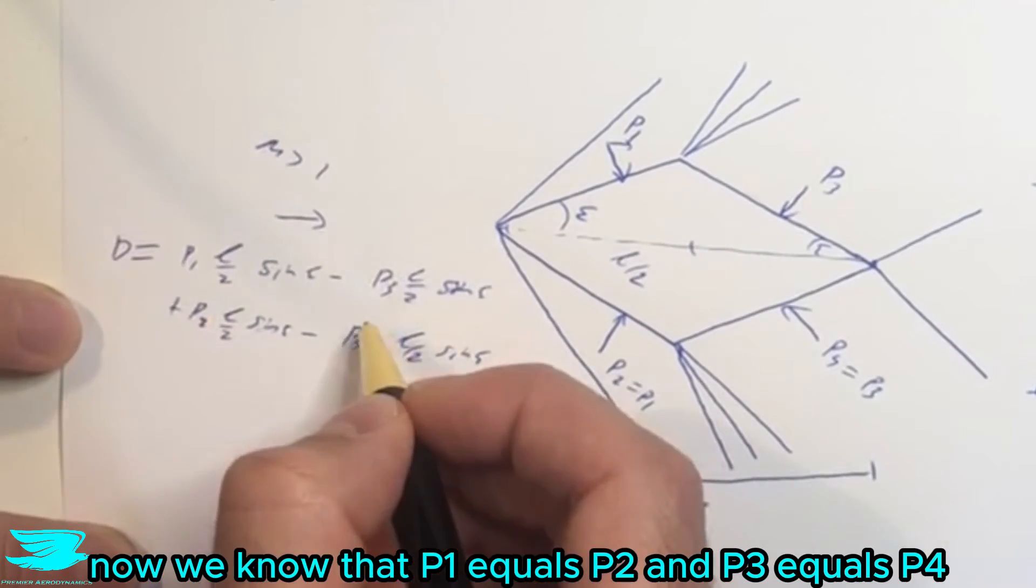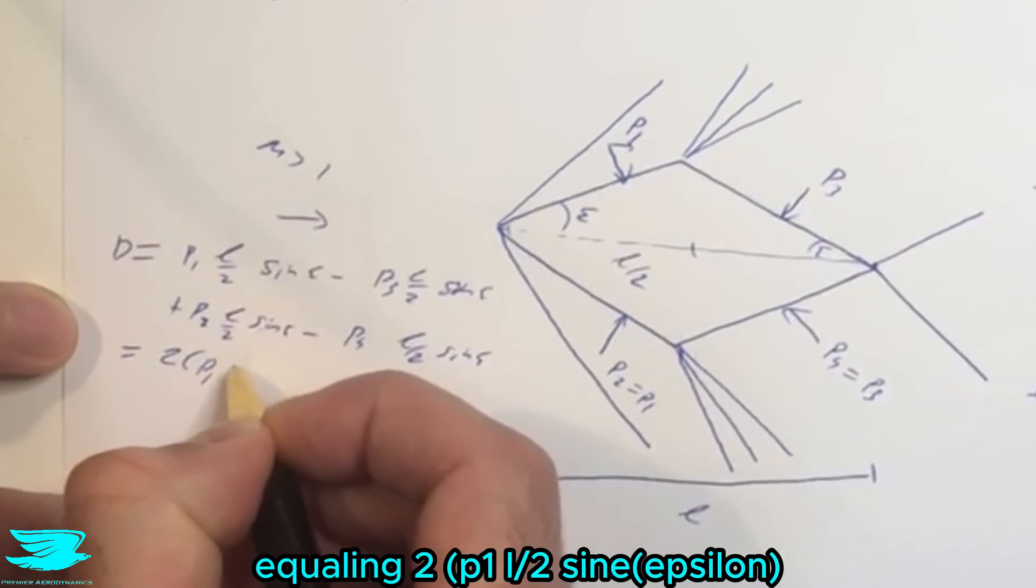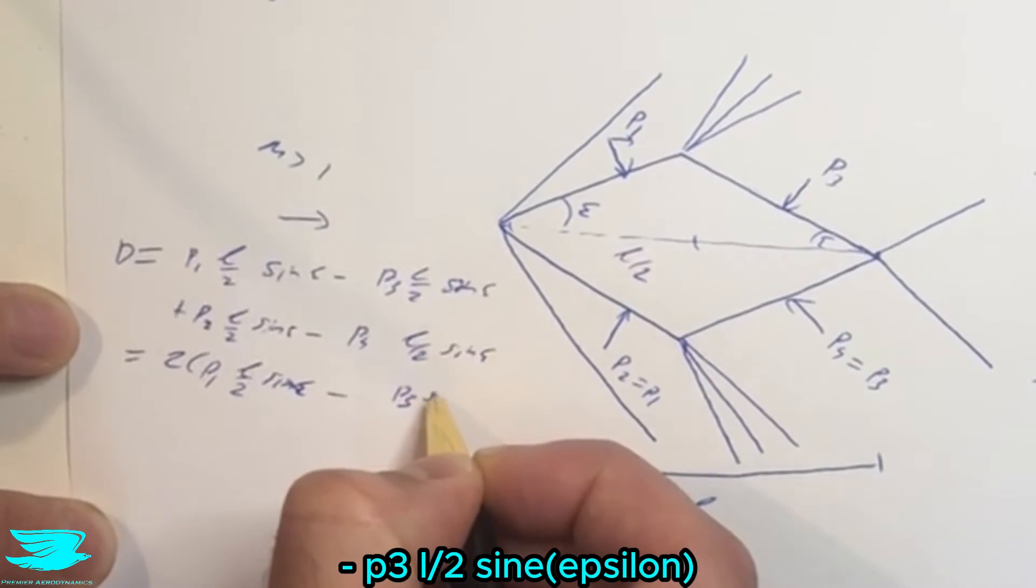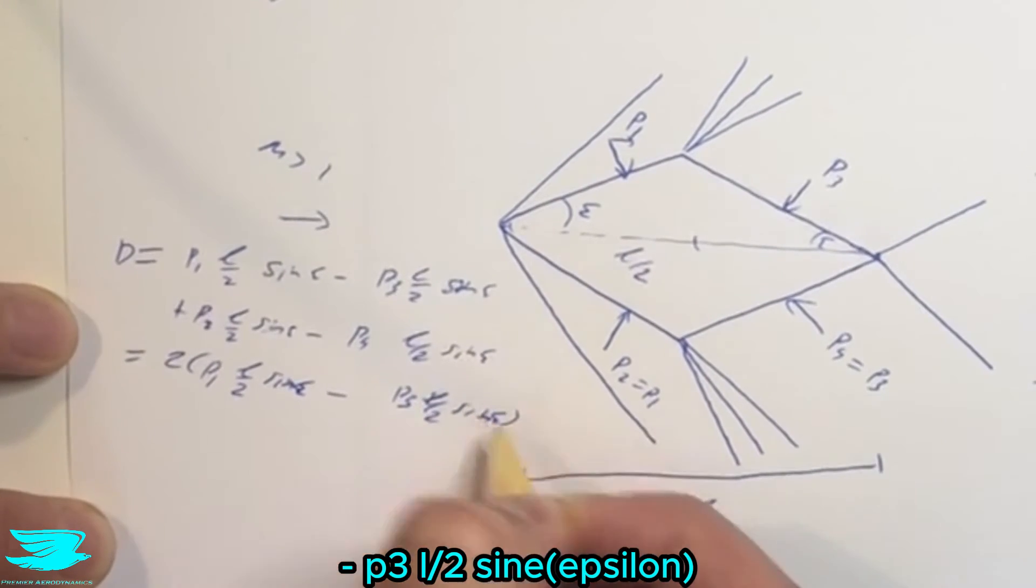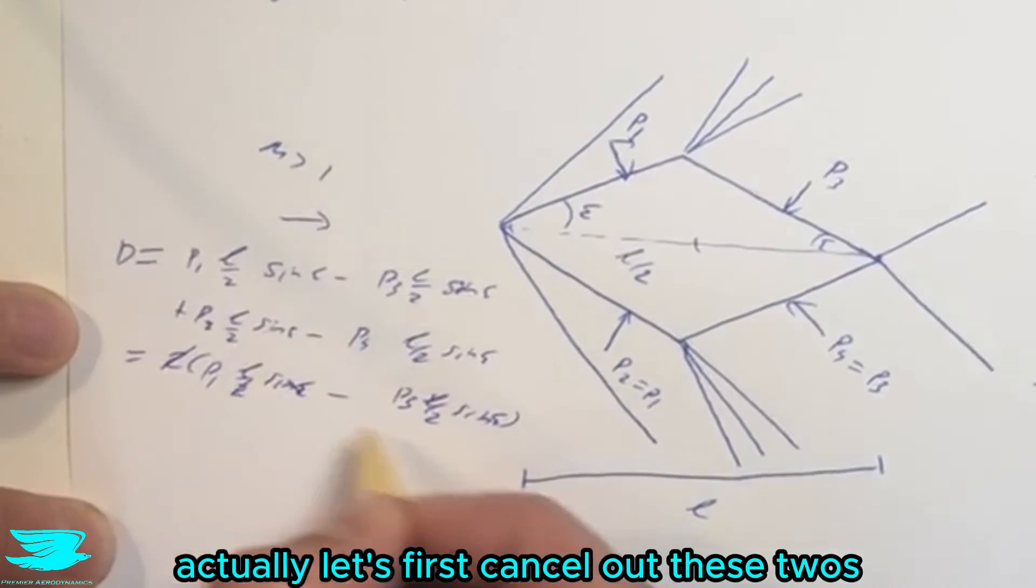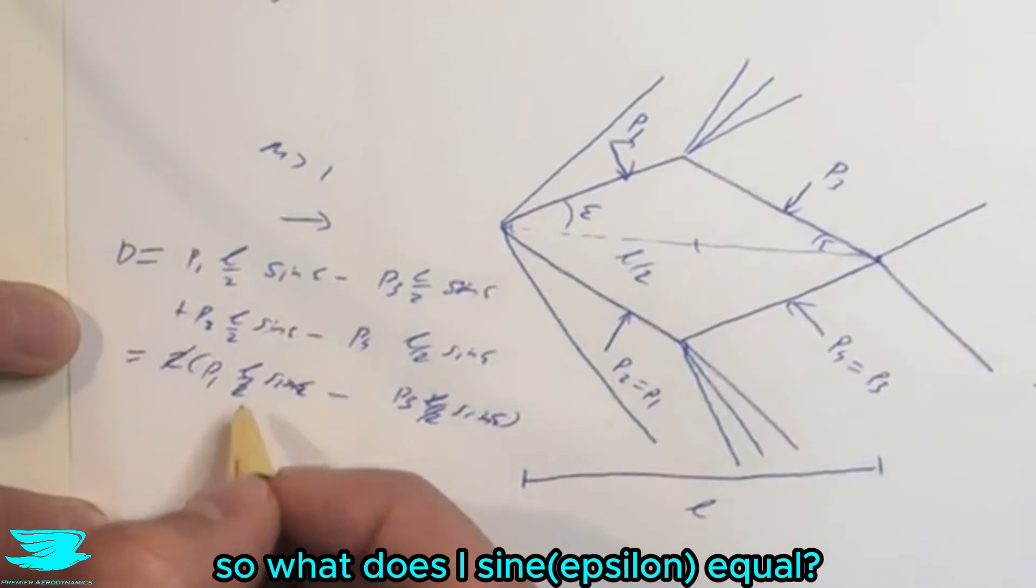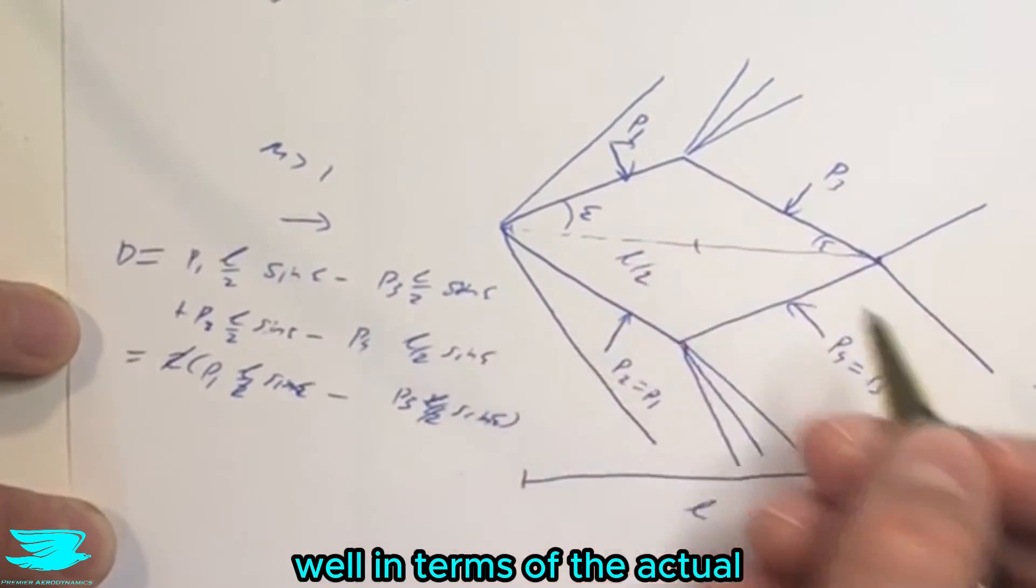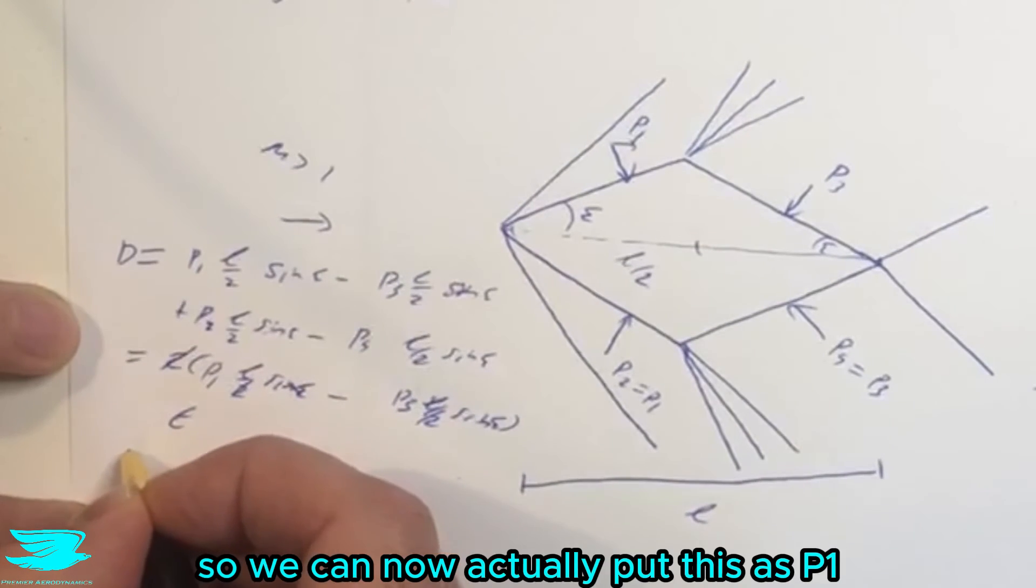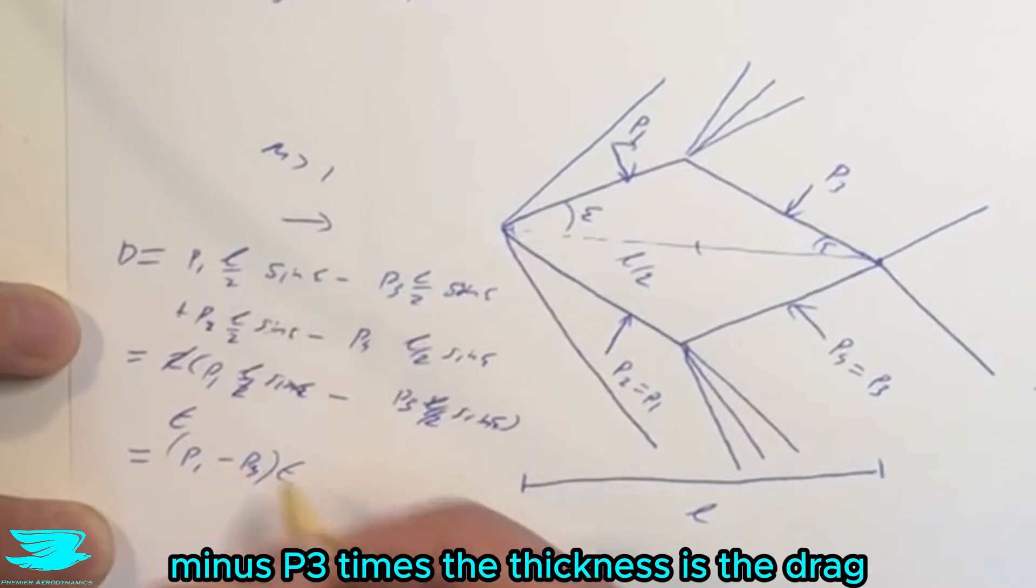Now we know that P1 equals P2 and P3 equals P4. So this results in drag equaling 2 P1 L on 2 sine epsilon, minus P3 L on 2 sine epsilon. And now in terms of what L on 2 sine epsilon equals, actually let's first cancel out these twos. So we have P1 L sine epsilon minus P3 L sine epsilon. So what does L sine epsilon equal? Well in terms of the actual triangle, it's actually the thickness. So we can now actually put this as P1 minus P3 times the thickness is the drag.